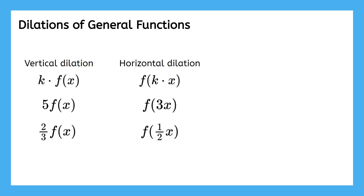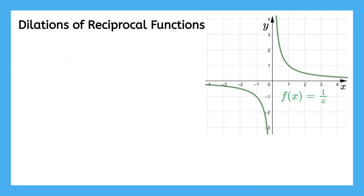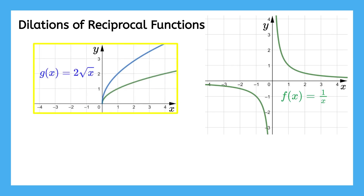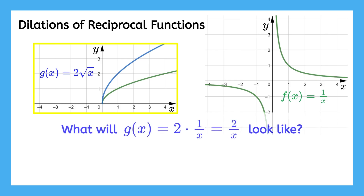As we move on to dilating the graph of one over x, keep in mind how the effects are different when we multiply on the outside of a function versus multiplying on the inside. What do dilations look like on the function one over x? To explore this, let's try out vertical and horizontal dilations by numbers greater than one and less than one. Let's start with a vertical dilation of two. Can you make a guess as to what the function two times one over x, or two over x, will look like?